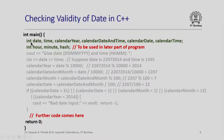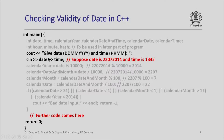We start the program with the declaration of the different variables needed — integer variables date, time, calendar year, calendar date, calendar time, hour, minute, and a hash value. The last three will be used in a later part of the program. Next we output the message asking for date in date-month-year format and time in hour-minute format, then read in the date and time. A comment is inserted to show how the date and time read in will be processed — comments are not processed by the compiler but are very useful for explaining the logic.